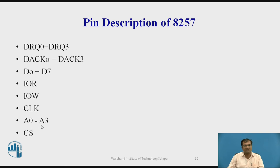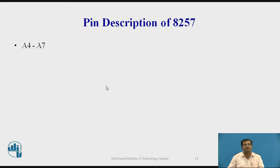Then address lines, A0 to A3. CS stands for chip select, selection of 8257. Next address lines, A4 to A7. Then there is a ready pin, which confirms whether the device is ready or not.